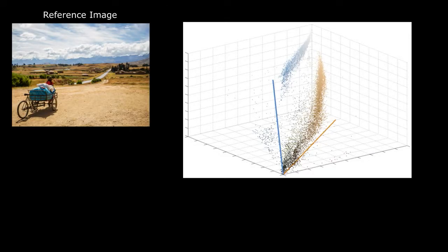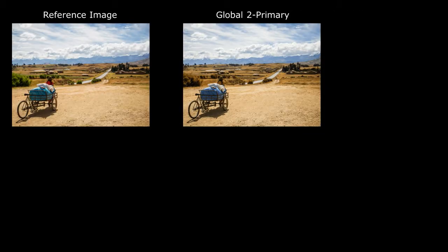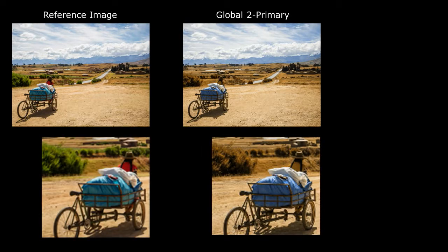Here's how our algorithm works. With natural image statistics, the pixels are not uniform in the RGB color space, but they rather form color lines. Exploring this, we can find least square-fitted principal axes and project pixels to find the optimized frames. This is the global content-adaptive optimized two-primary method. Although the image looks great globally, finer details are ignored by the least square-fitting.